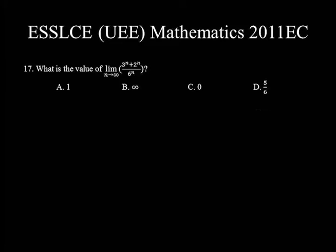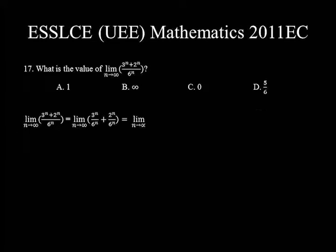Question number 17. What is the value of lim[n→∞] (3ⁿ + 2ⁿ) / 6ⁿ? Splitting the expression: lim[n→∞] (3/6)ⁿ + (2/6)ⁿ = lim[n→∞] (1/2)ⁿ + (1/3)ⁿ. Since 1/2 and 1/3 are fractions with denominators greater than numerators, as n approaches infinity both terms approach 0.